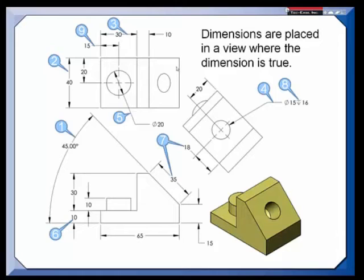Now the dimensions have to be placed in a view where the dimension is true or where the feature is shown in its true shape. Notice that this 35 is on this angle. It would have been wrong to have that 35 here because it's not 35, it's foreshortened in this top view. But this is giving us a view of the true shape of the surface.